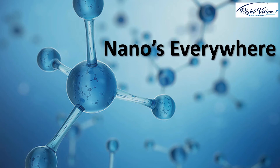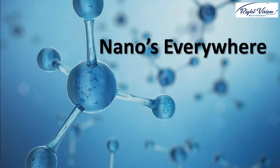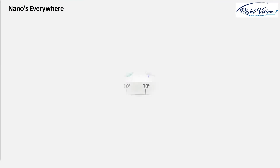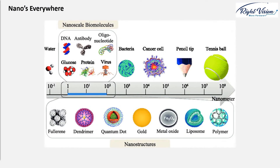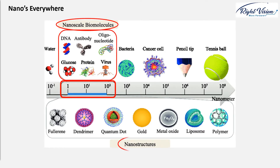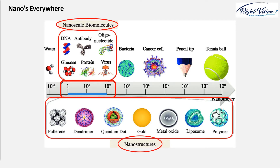Hi. In the previous lectures, we saw that the prefix nano would be attributed to anything with a dimension of 1 to 100 nanometers. In fact, the nanoworld involves a very broad range of super tiny stuff, from a variety of nanoparticles such as gold nanoparticles and silver nanoparticles, to nanomaterials and nanostructures such as quantum dots, carbon family structures like carbon nanotubes, graphene ribbons, fullerene, and many many more.